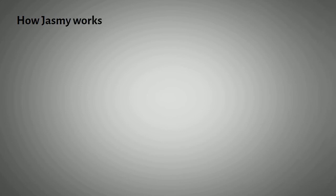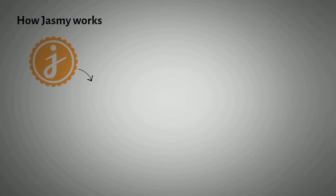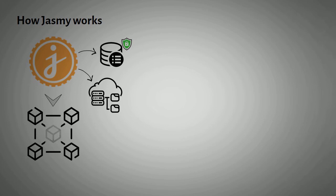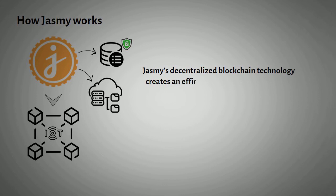The Jasmine platform creates and maintains the infrastructure necessary for data owners to store, access, exchange, and otherwise use their own data securely and safely. It accomplishes this through its IoT platform's latest blockchain technology. Base modules have the ability to communicate securely and efficiently with IoT devices, and Jasmine's decentralized blockchain technology creates an efficient and democratic process.